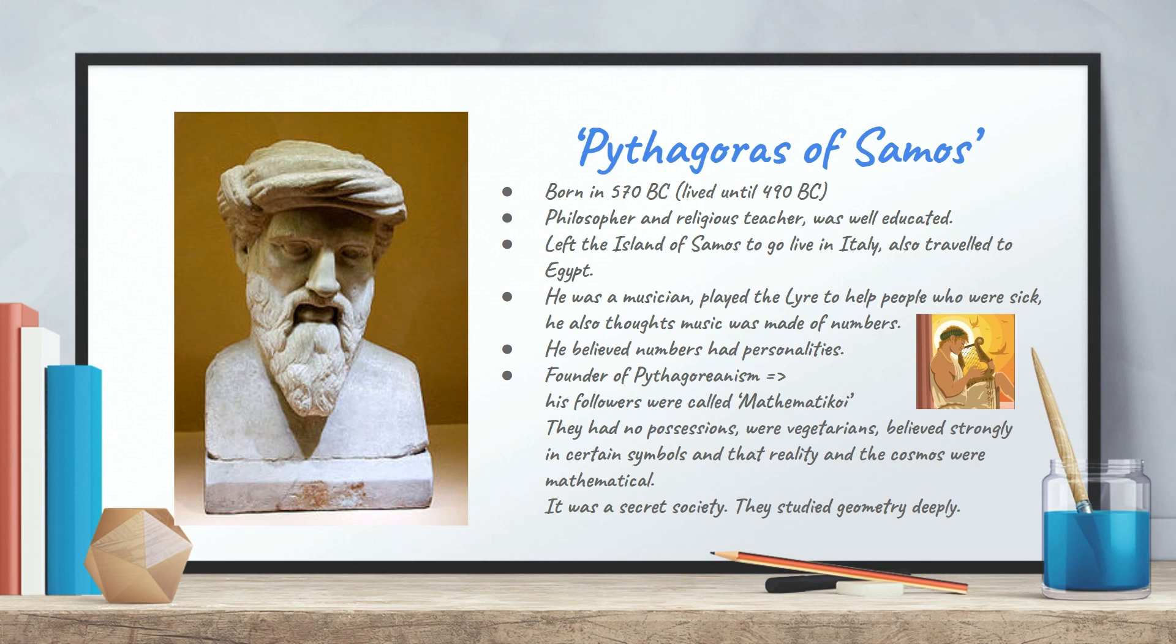He left Samos, apparently because of tyrannical rule, to go live in Italy. Now, on his way to Italy, he also traveled to Egypt, and apparently his exposure to Egyptian culture really helped him in terms of his way of life, but it also helped him in terms of his mathematics.